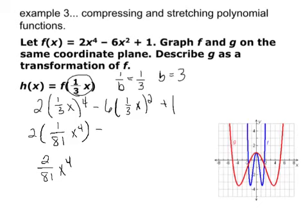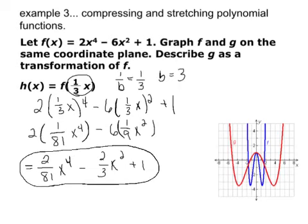Next set. 1 third raised to the 2nd power is 1 ninth x squared times 6. 6 over 9 is the same as 2 over 3 plus 1. So this would be g of x. You would graph them both, and you would get a horizontal stretch by a factor of 3. We didn't write on the first slide that that was a vertical compression by a factor of a half.